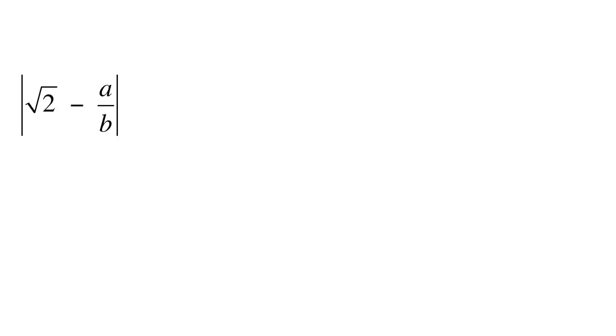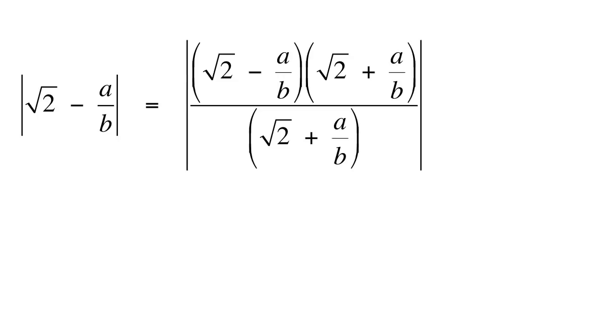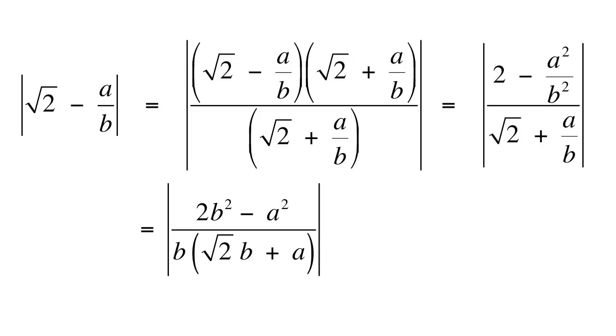Now let's do some algebra with root 2 minus a over b. Multiply the top and bottom by root 2 plus a over b. Now simplify the numerator, then the whole expression.